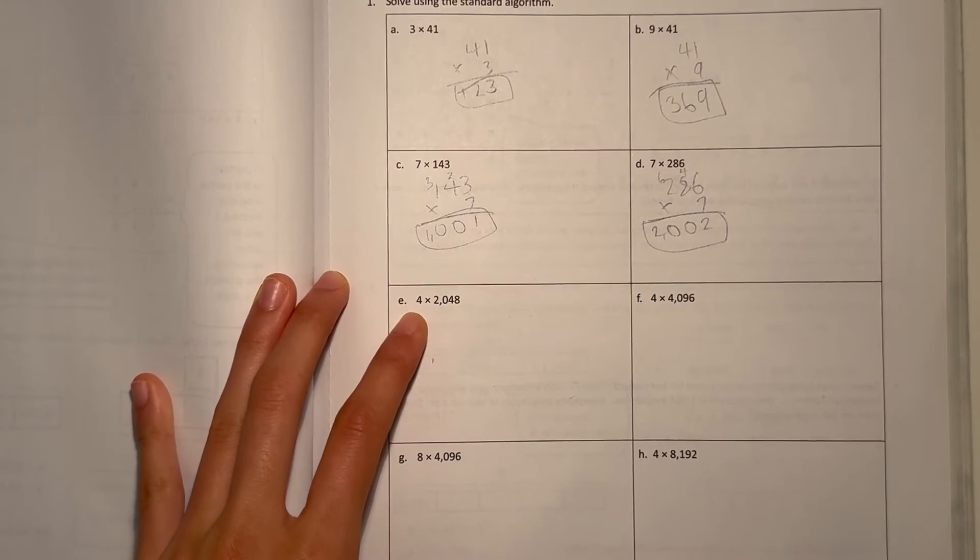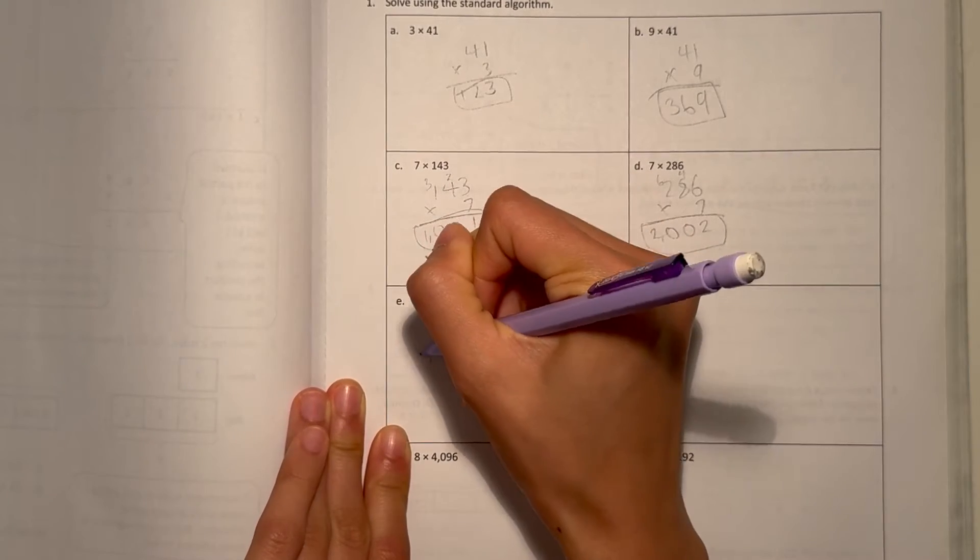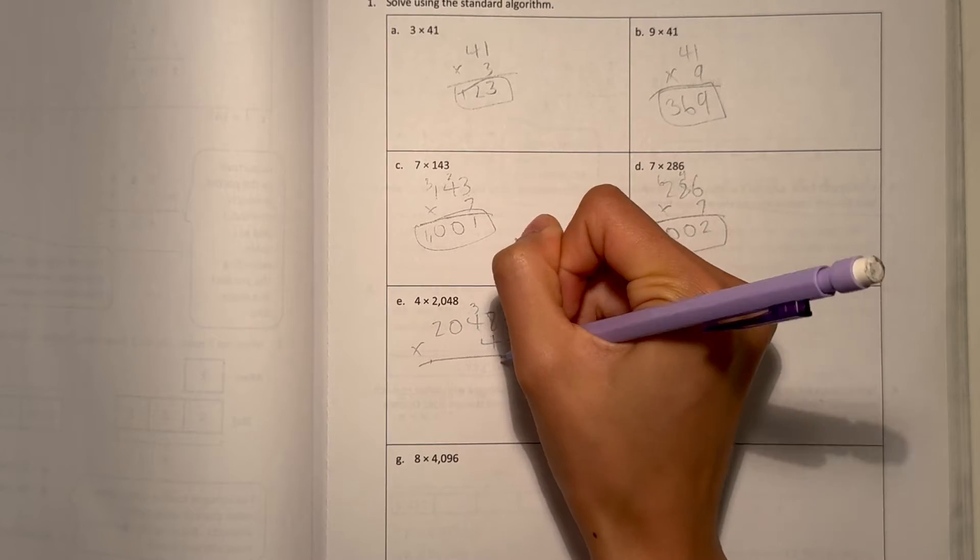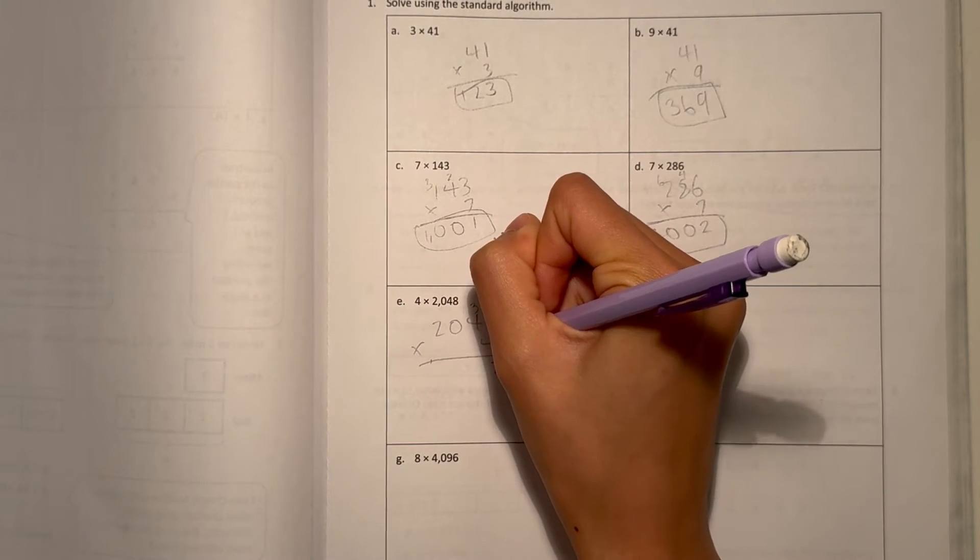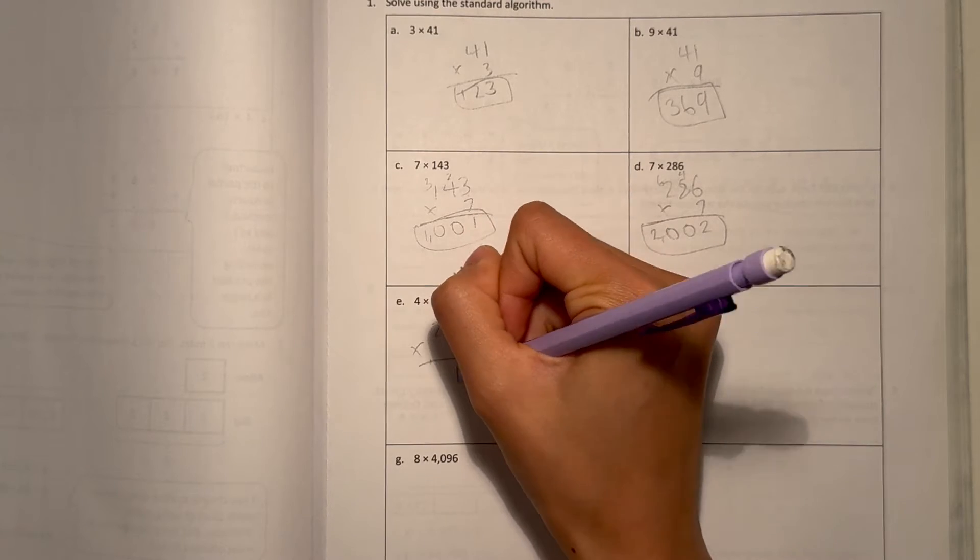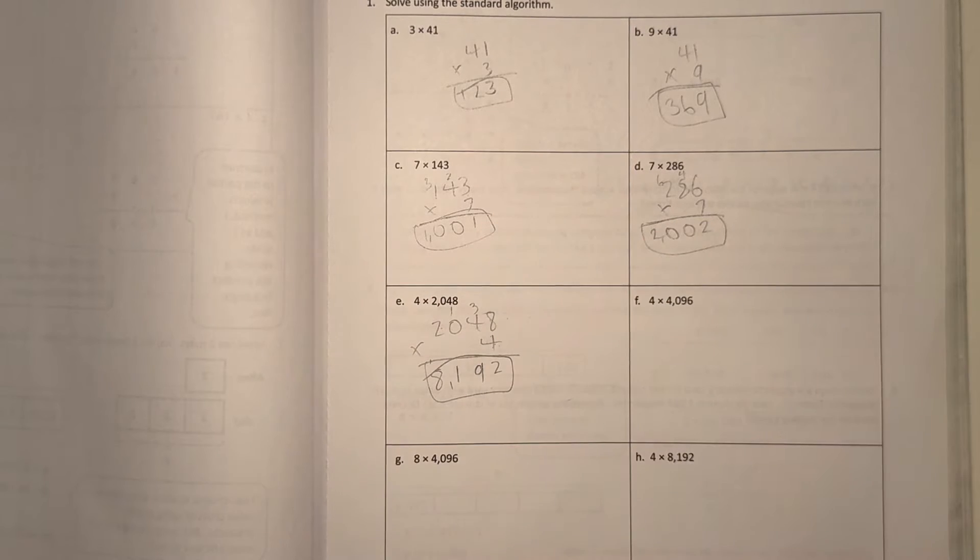E, let's rewrite it as 2,048 times 4. 8 times 4 is 32. 4 times 4 is 16, plus 3 is 19. 0 times 4 is 0, plus 1 is 1. And 2 times 4 is 8. So our answer is 8,192.